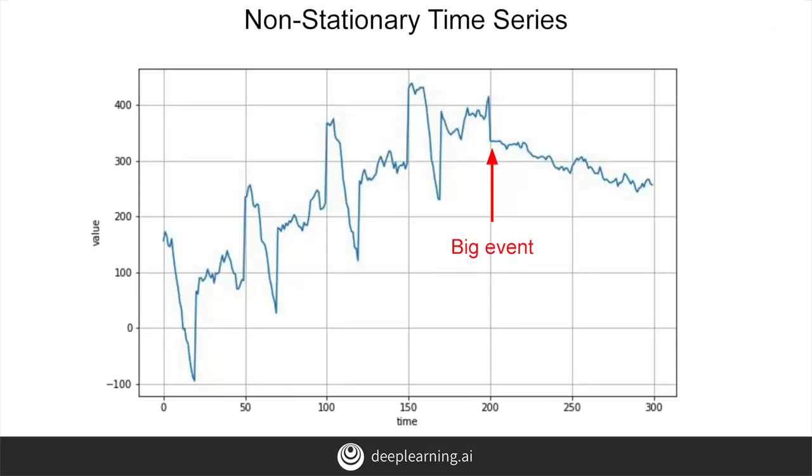Of course, real-life time series are not always that simple. Their behavior can change drastically over time. For example, this time series had a positive trend and a clear seasonality up to time step 200. But then something happened to change its behavior completely.